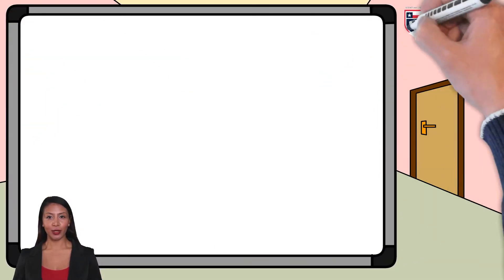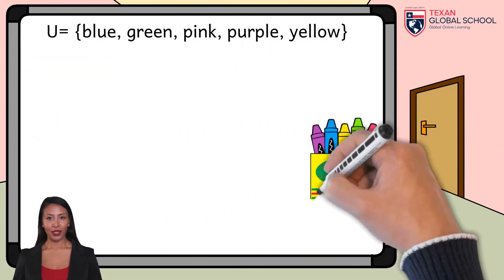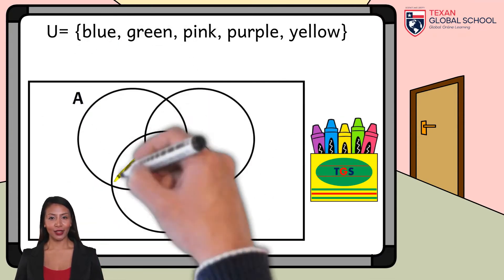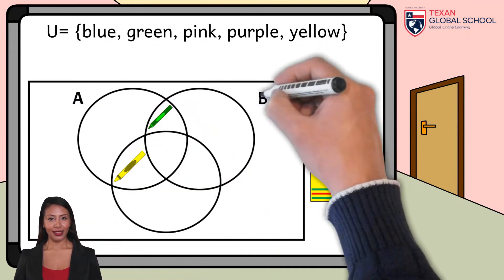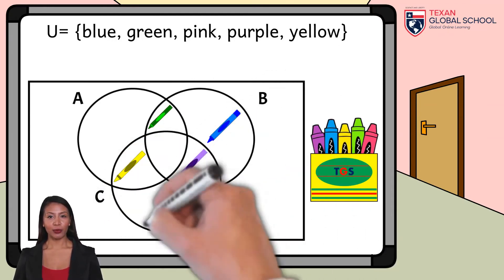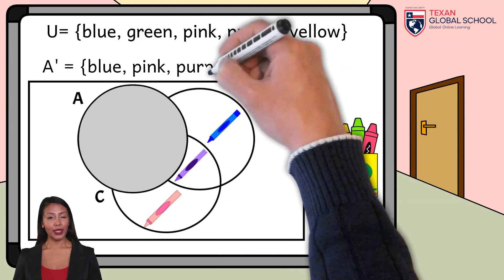In this way, we can see the complement of Set A more easily by using the Venn-Euler diagram. The elements of the complement of Set A are those outside this set. So, we cover Set A and see the missing elements to complete the universal set. Therefore, it is observed that the complement of A is the blue, purple, and pink crayons.